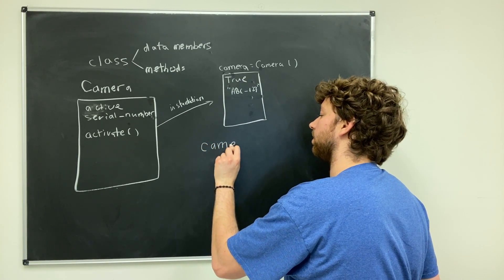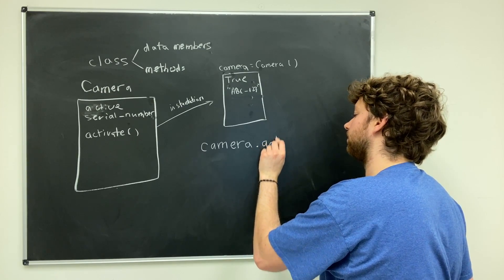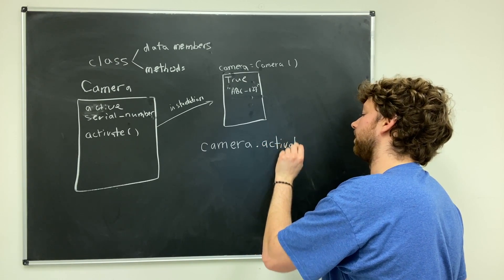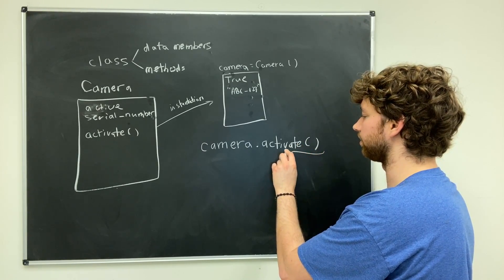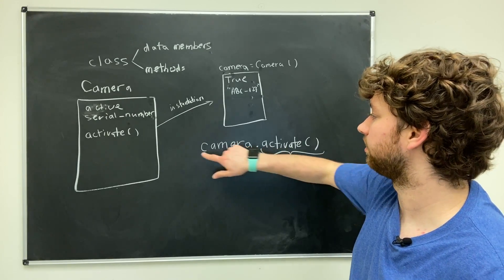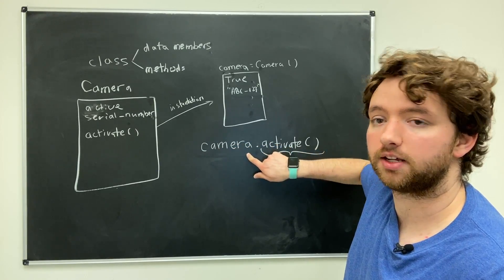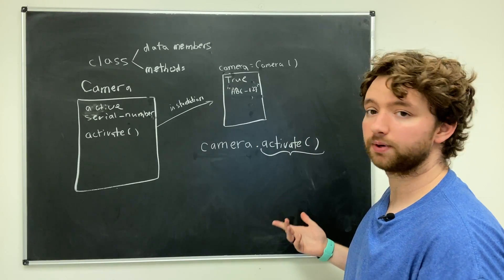When we create that function inside of that camera class, we use it on this camera object. The way we would use it is we would say camera.activate. Notice it looks just like any other function call, but now we prefix it with this dot operator and the object we want to activate, so it's specifically related to this camera.